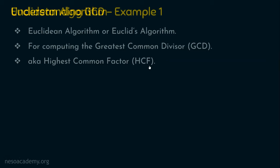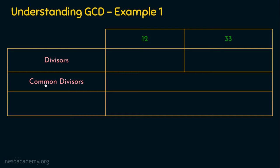We are in example one for understanding the GCD, the greatest common divisor. We are going to find the GCD of two different numbers, so I have taken two different columns. Let's say the first number is 12 and the second number is 33. I am going to find the divisors first, then find the common divisors, and then find the greatest common divisor. Let's focus on the number 12. The divisors of 12 are 1, 2, 3, 4, 6 and 12. When 12 is divided by these numbers, we get remainder 0.